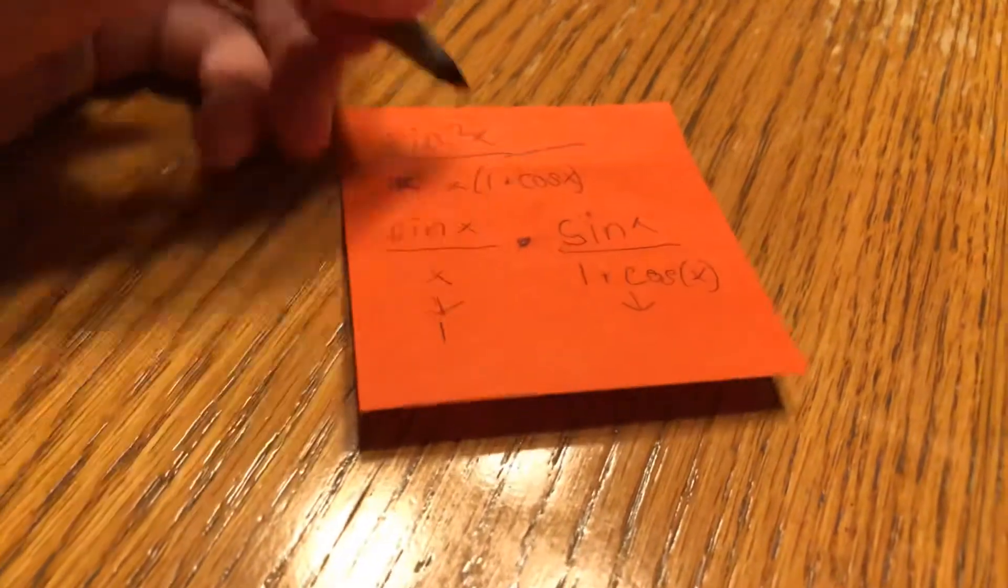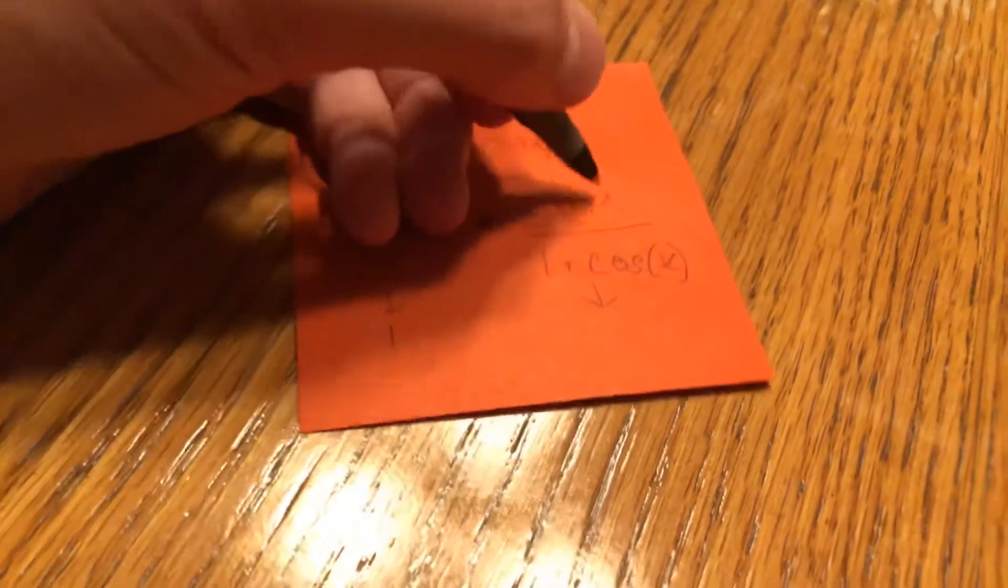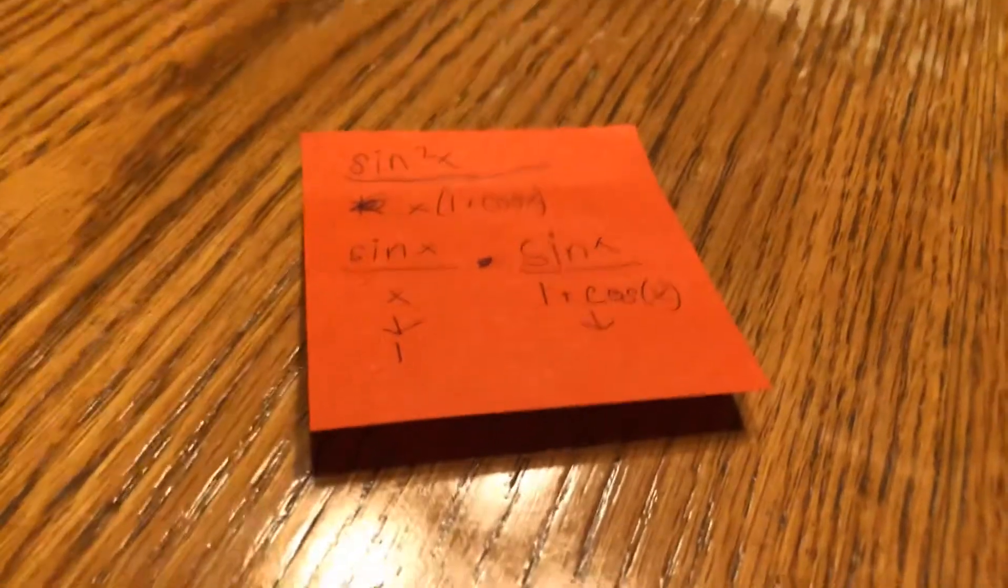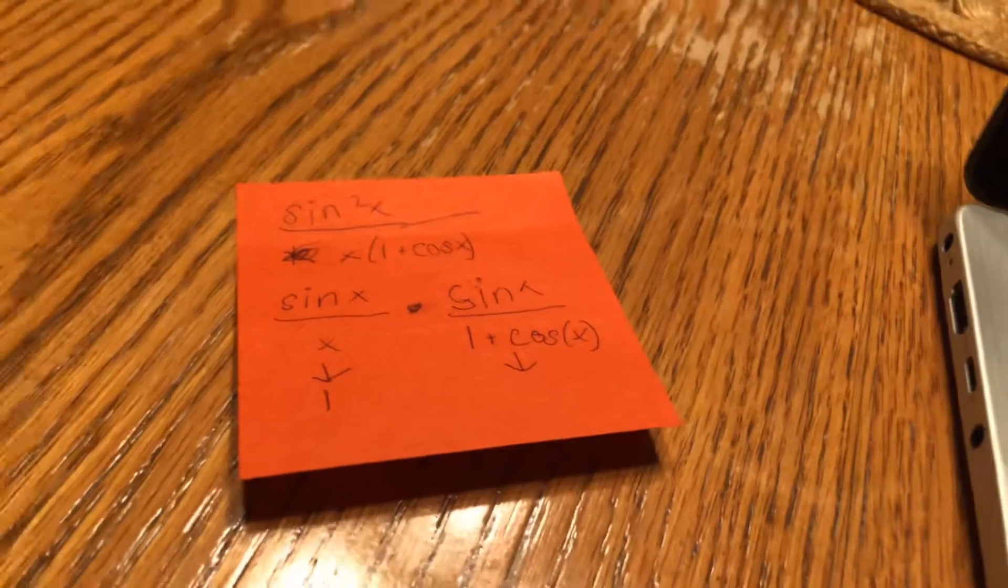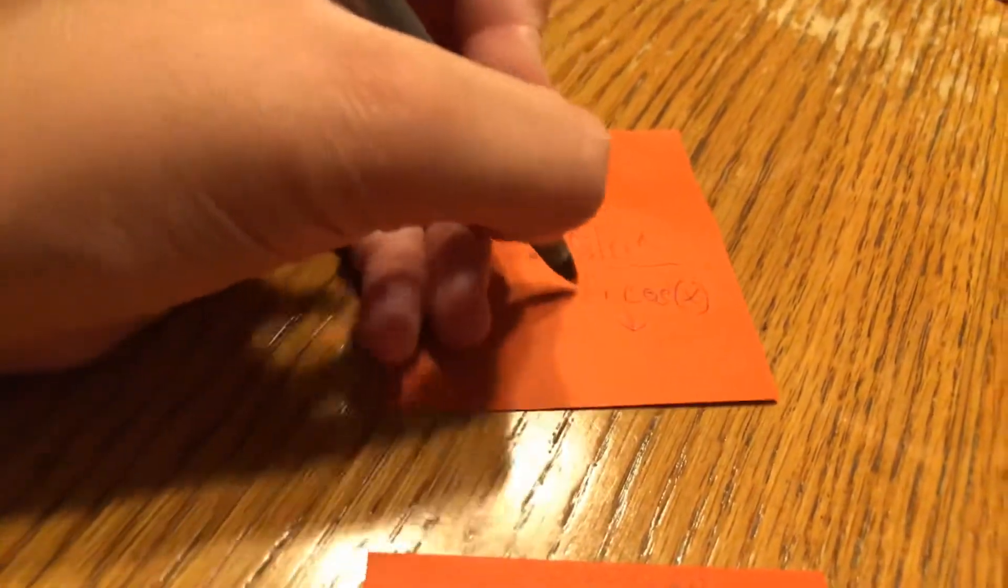And we're thinking in terms of limits here, remember? So the sine of x, this is just 0 divided by 1 plus cosine of x. Well, that's not going to be 0 because cosine of x is 1. 1 plus 1. Hmm. I've been pondering that one for a long time. And I've come to the conclusion it's 2.